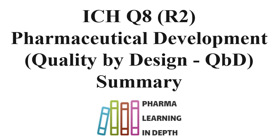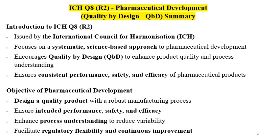In summary, this guideline provides the basis for QbD principles to be applied in pharmaceutical product development. Quality by design is the main area for this guideline. ICH Q8 is for development purposes — how quality is built into the pharmaceutical formulation or product. This guideline is issued by the International Council for Harmonization and focuses on a systematic, science-based approach for pharmaceutical development, utilizing and providing QbD principles.